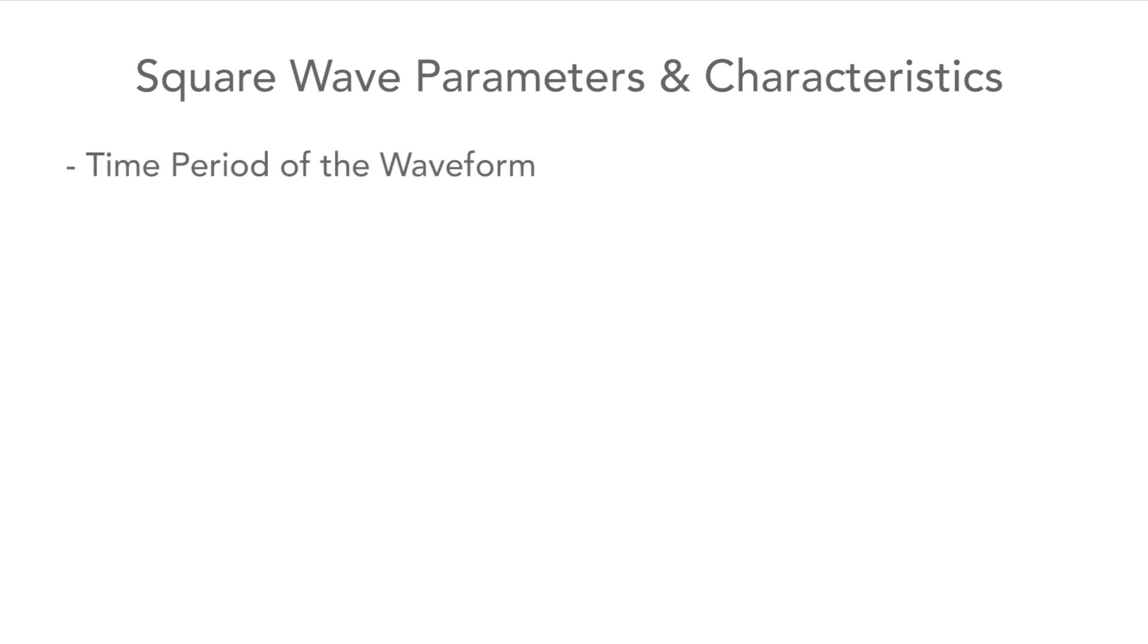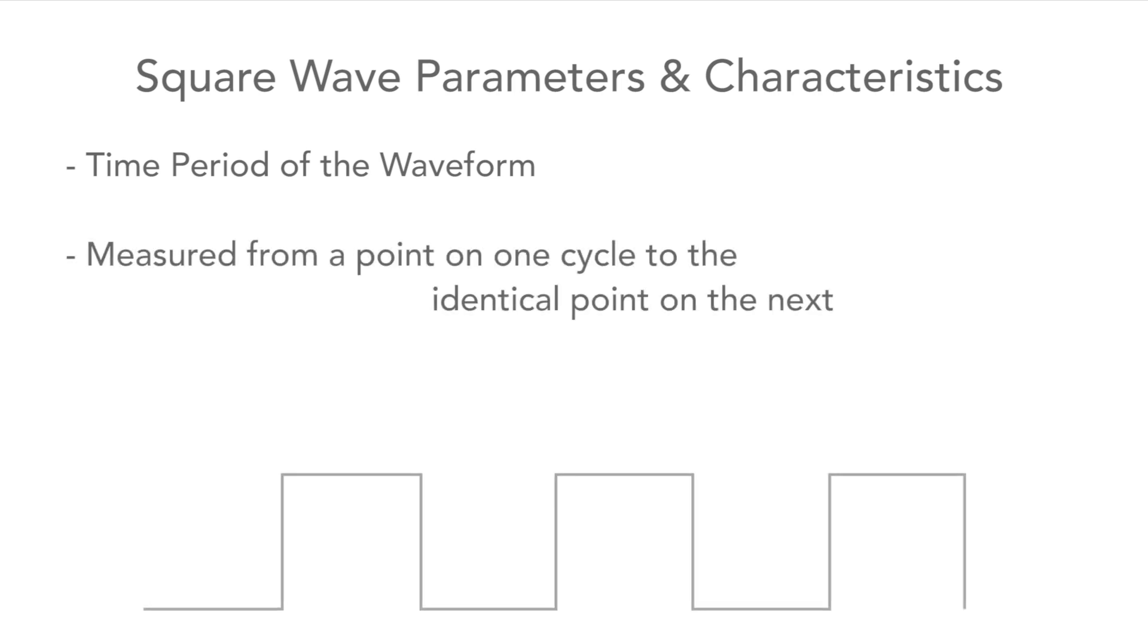Another key aspect of a square wave is the period of the waveform. This is measured from a particular point on one cycle of the waveform to the same point on the next one. The easiest points to use are either the rising or falling edges of the square wave.